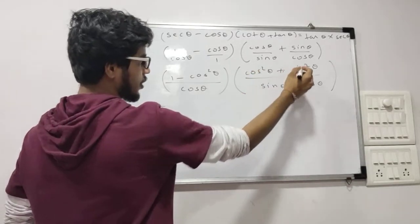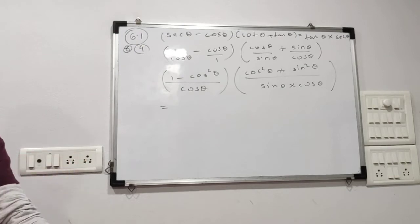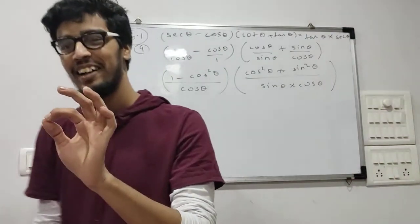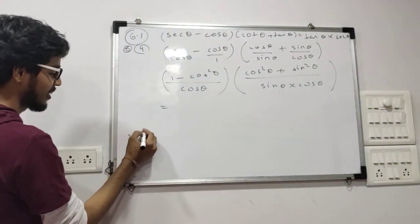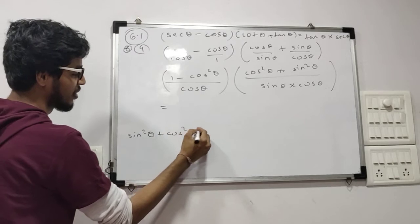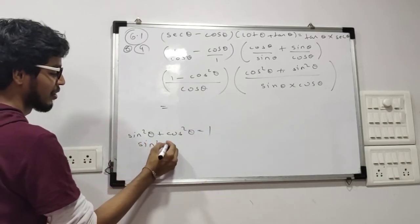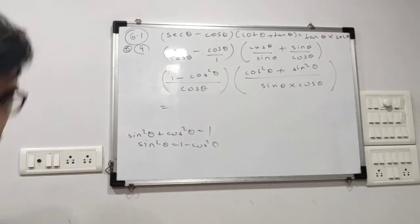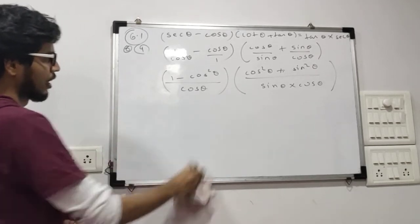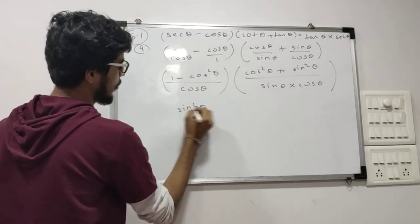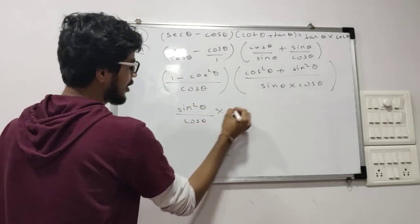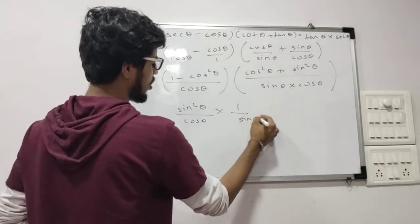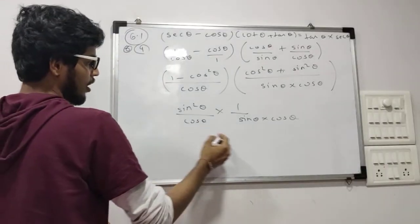Sin squared theta plus cos squared theta equals 1 — done. But wait — what is 1 minus cos squared theta? It is sin squared theta. The reason is: sin squared theta plus cos squared theta equals 1, so sin squared theta equals 1 minus cos squared theta. Therefore we have sin squared theta upon cos theta into 1 upon sin theta into cos theta.